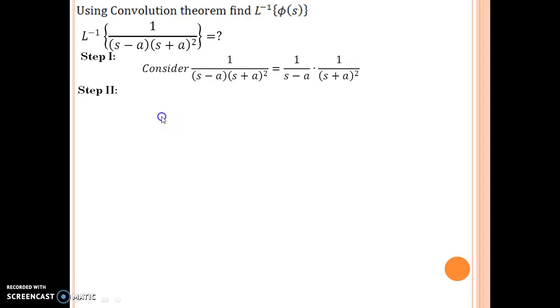We have to recognize 1 upon s minus a as an inverse Laplace of some function. If we are able to see that, then we can move to the second step and we can write that Laplace of f of t is equal to 1 upon s minus a. Then f of t is nothing but inverse Laplace of 1 by s minus a is equal to e to the power a t.